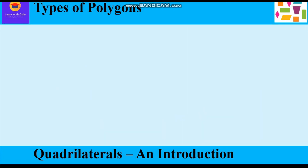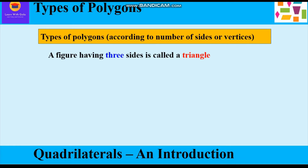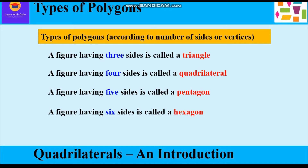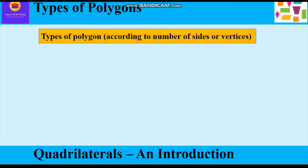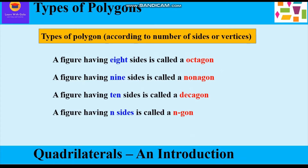Now we shall study types of polygons according to the number of sides or vertices. A figure having three sides is called a triangle, four sides a quadrilateral, five sides a pentagon, six sides a hexagon, seven sides a heptagon, eight sides an octagon, nine sides a nonagon, ten sides a decagon, and a figure having n sides is called an n-gon.